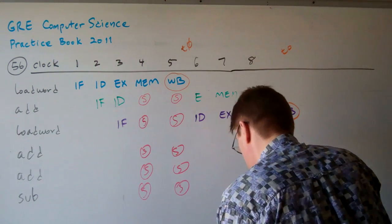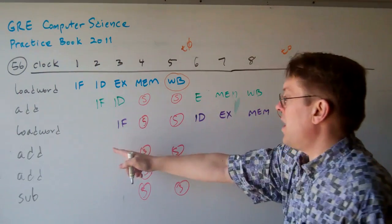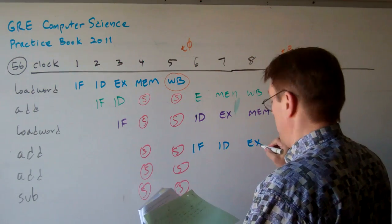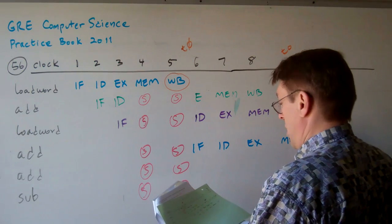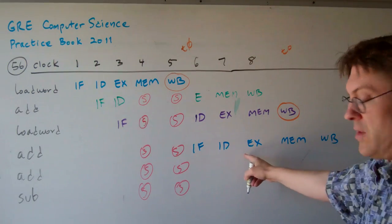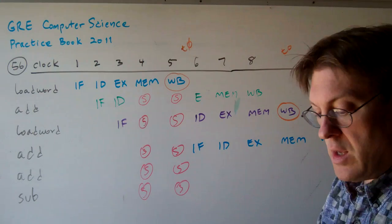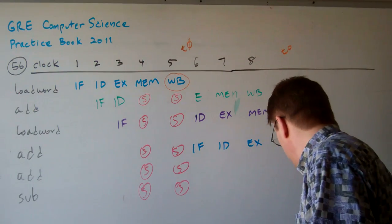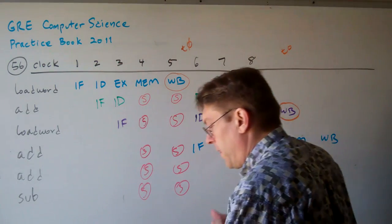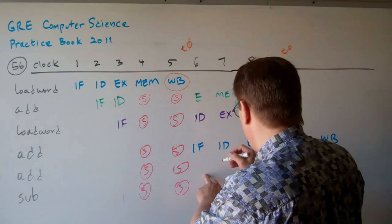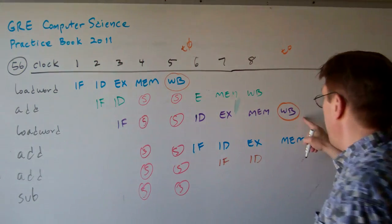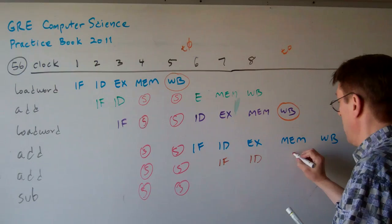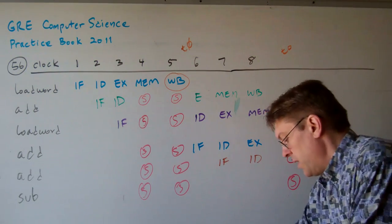Now this next add operation — let's do it in blue. The first add operation doesn't matter because it's not using any changed information; it's just using T1, so it's not affected by T0. But the second add requires the information from T1, so what do we have to do? Stall again — and then this one can continue.